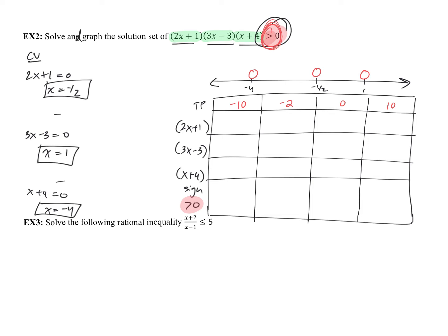Plugging negative 10 into each factor: 2x plus 1 gives negative, 3x minus 3 gives negative, and x plus 4 gives negative. Negative times negative is positive, and positive times negative is negative. Is negative greater than 0? No — so we do not include that interval.